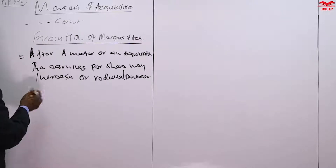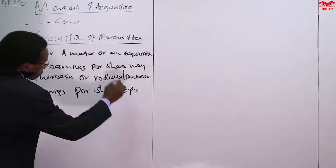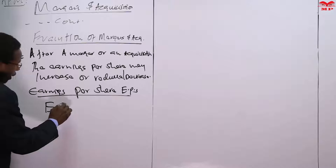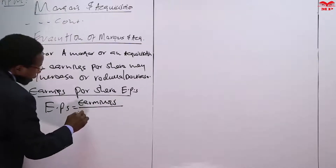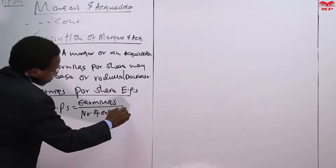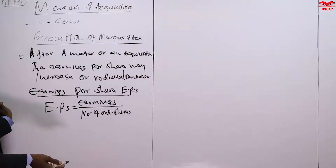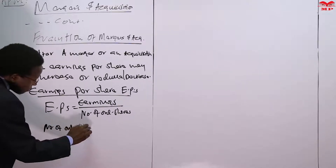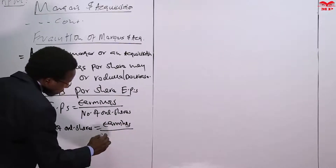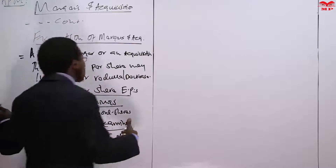How do we compute earnings per share? Earnings per share is computed by taking the total earnings and dividing by the number of ordinary shares. We can also rearrange to find the number of ordinary shares by taking total earnings divided by the earnings per share. Our main concern, however, will be: what will the earnings be after acquisition — that is, the post-acquisition earnings per share?